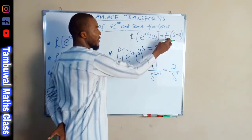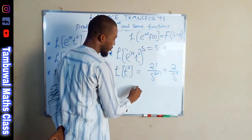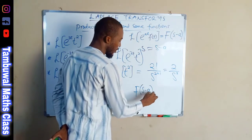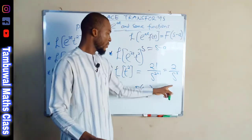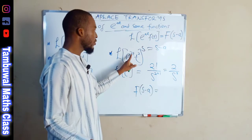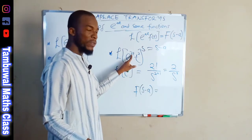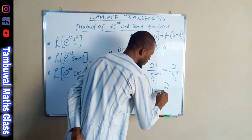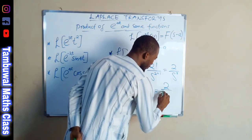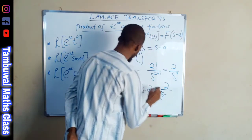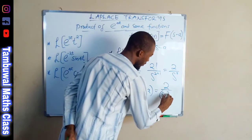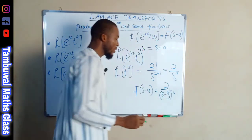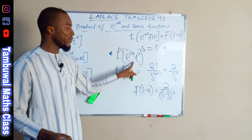To find F(s minus a), we replace s with s minus a, where a equals three. So the final answer is two divided by (s minus three) to the power of three. This is the Laplace transform of e^(3t) times t squared.